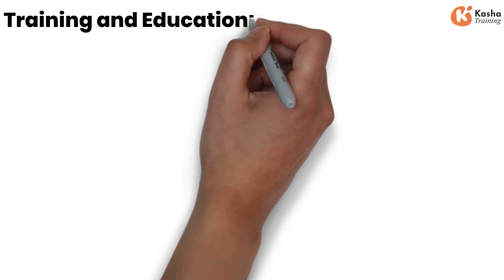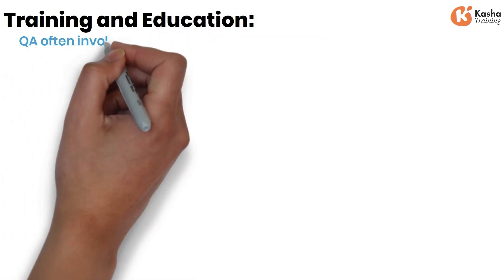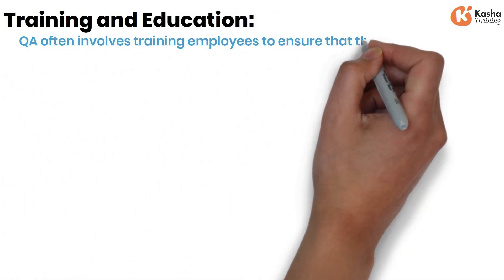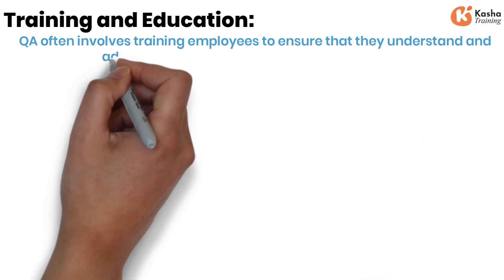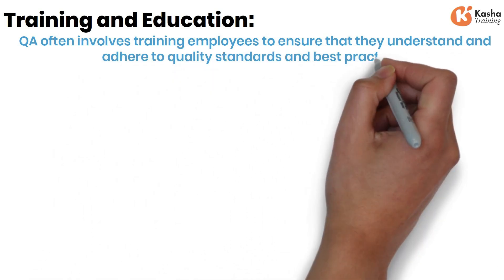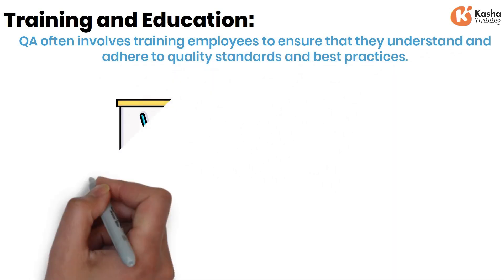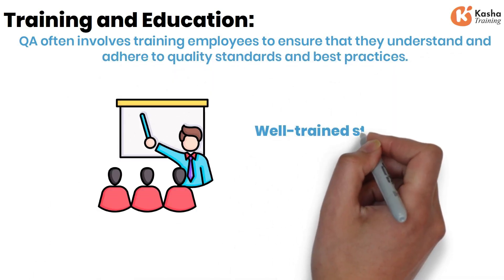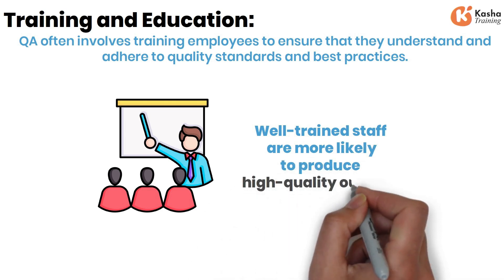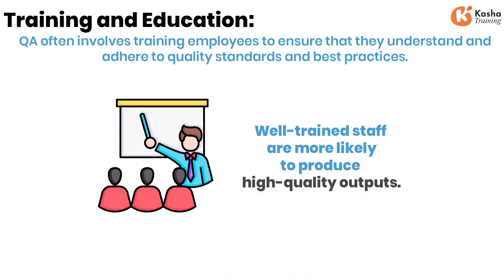Training and Education. QA often involves training employees to ensure that they understand and adhere to quality standards and best practices. Well-trained staff are more likely to produce high-quality outputs.